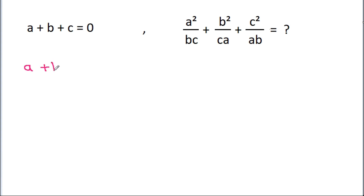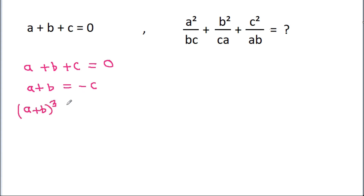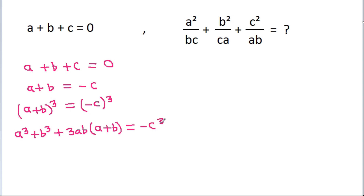We have A plus B plus C is equal to 0, so A plus B will be equal to minus C. And if we cube both sides, then A plus B cubed will be equal to minus C cubed. Expanding: A cubed plus B cubed plus 3AB times A plus B is equal to minus C cubed. Since A plus B is minus C, we substitute that in.